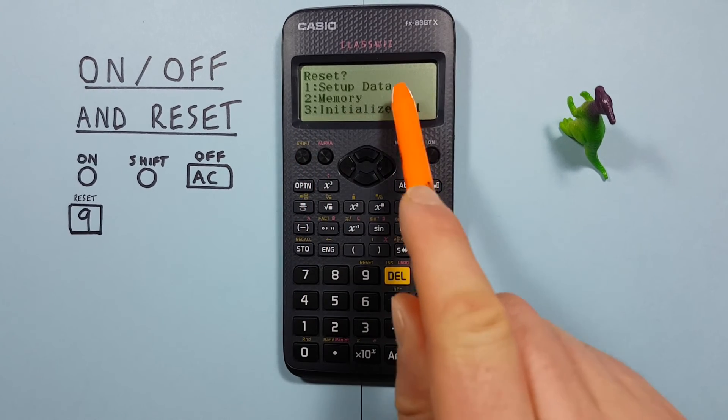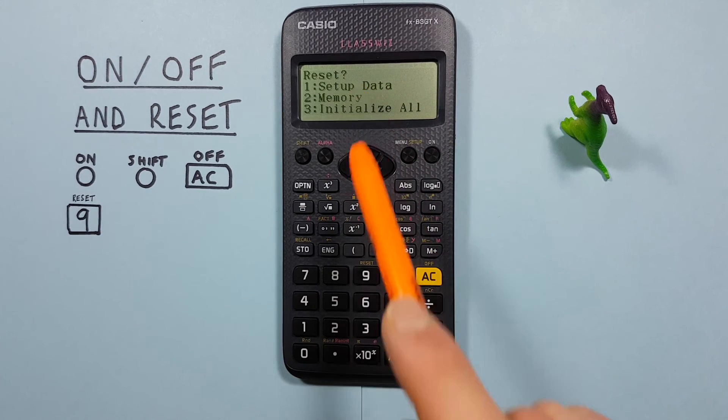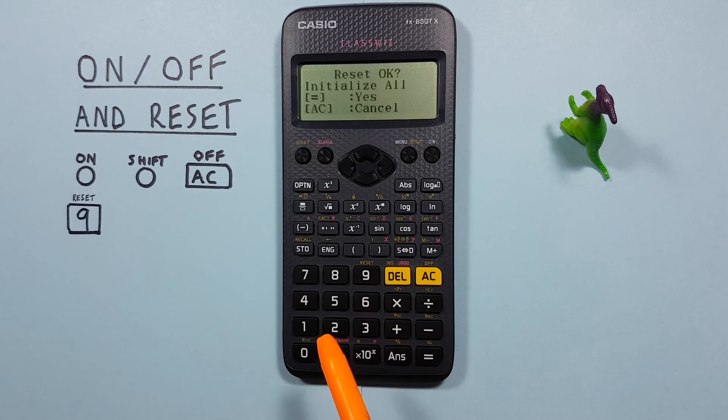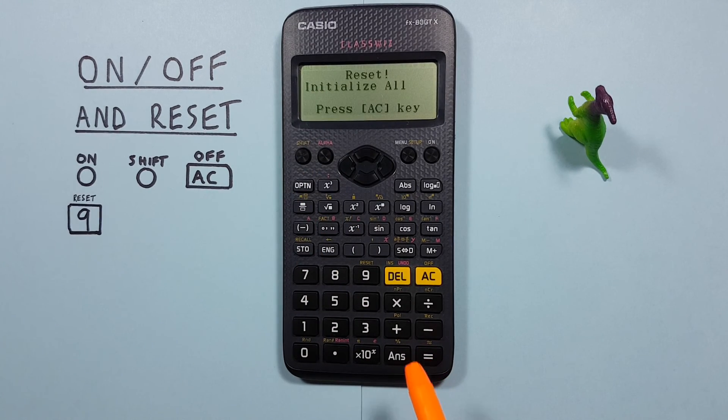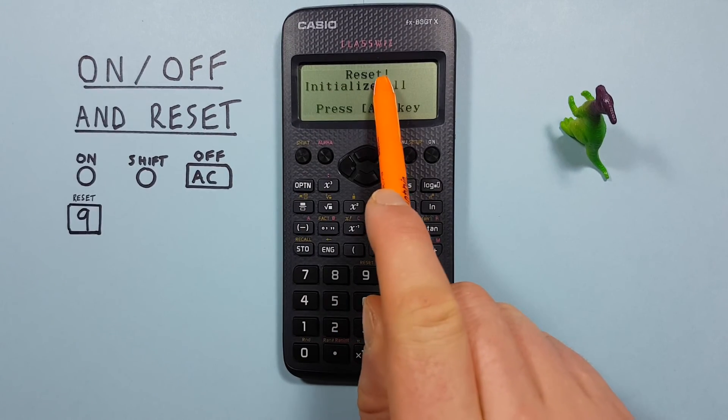which, again, is both the setup data and the memory. So we can press 3, press equals for initialize all, and our calculator has been reset.